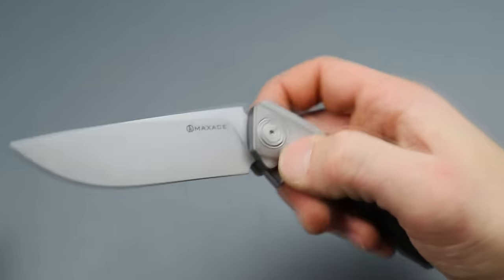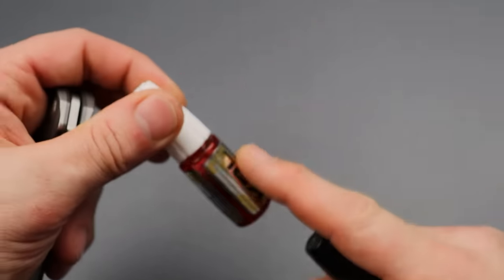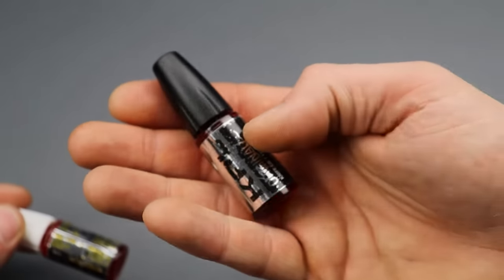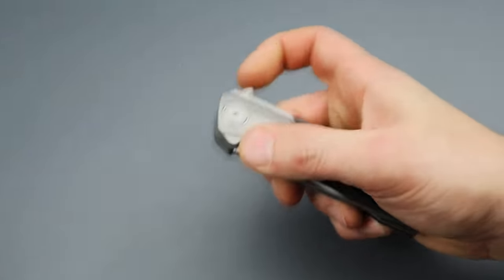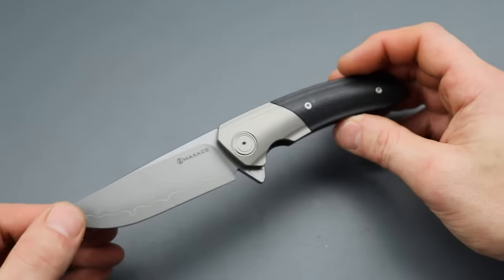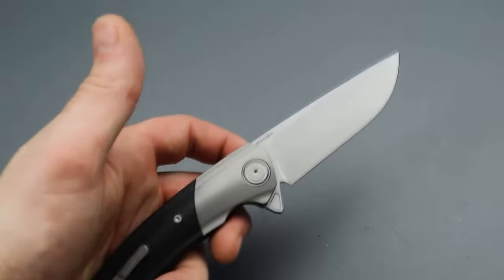Or at least very drop shutty. And this is not even broken in yet. Let me drop a little oil on it. I added a little KPL heavy to the detent ball and then original to the bearings, which I do recommend that. That's my favorite lubrication for pocket knives. I always have them linked down in the description.